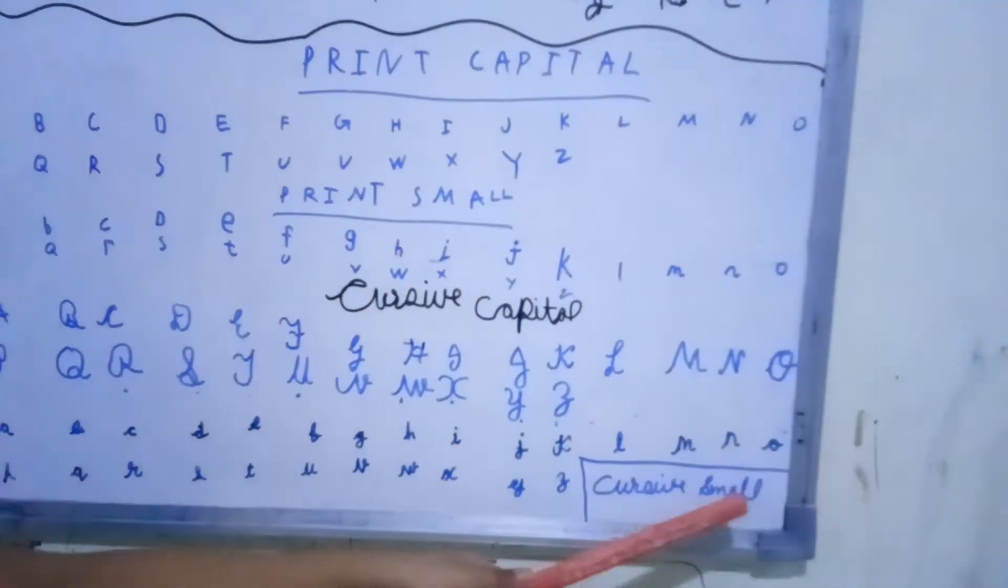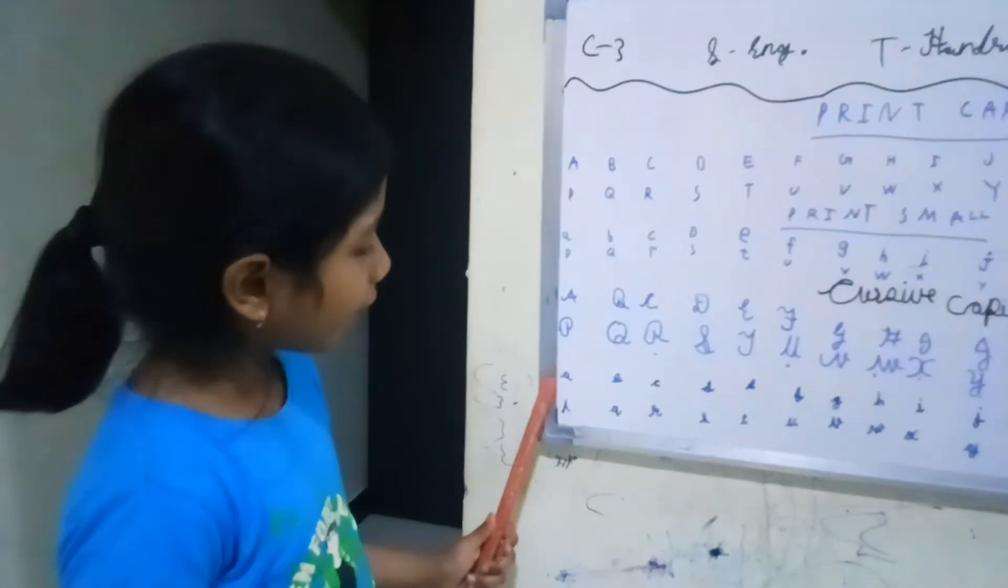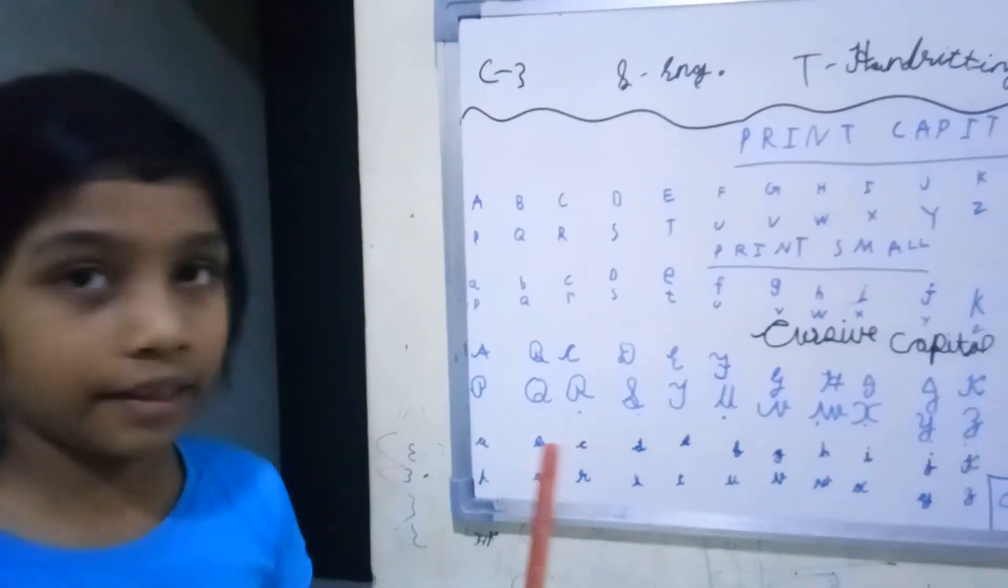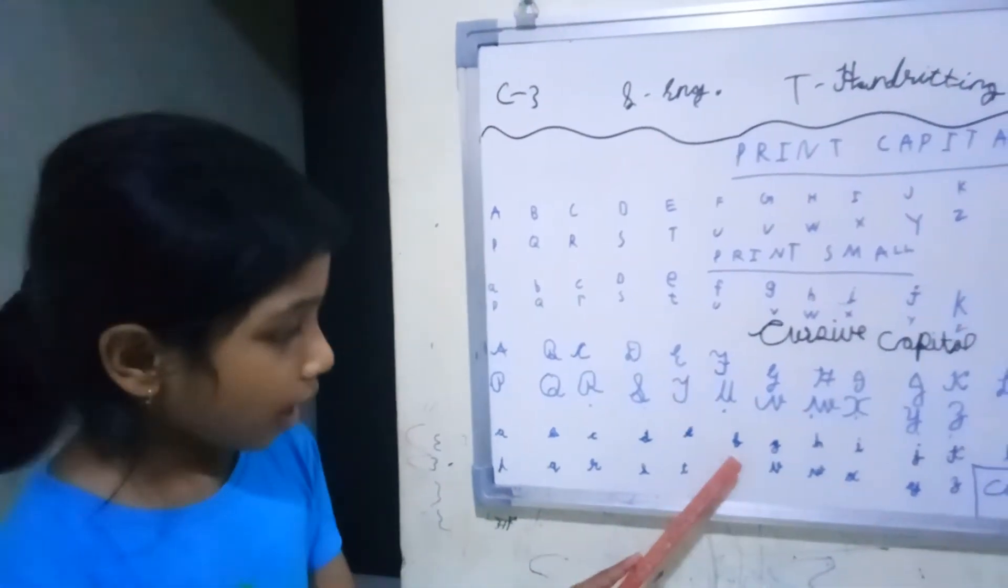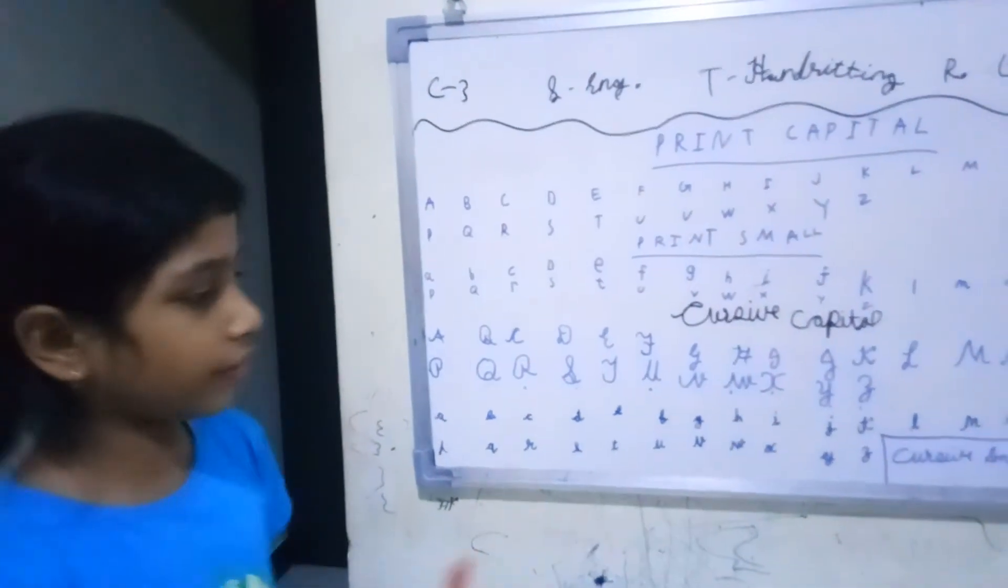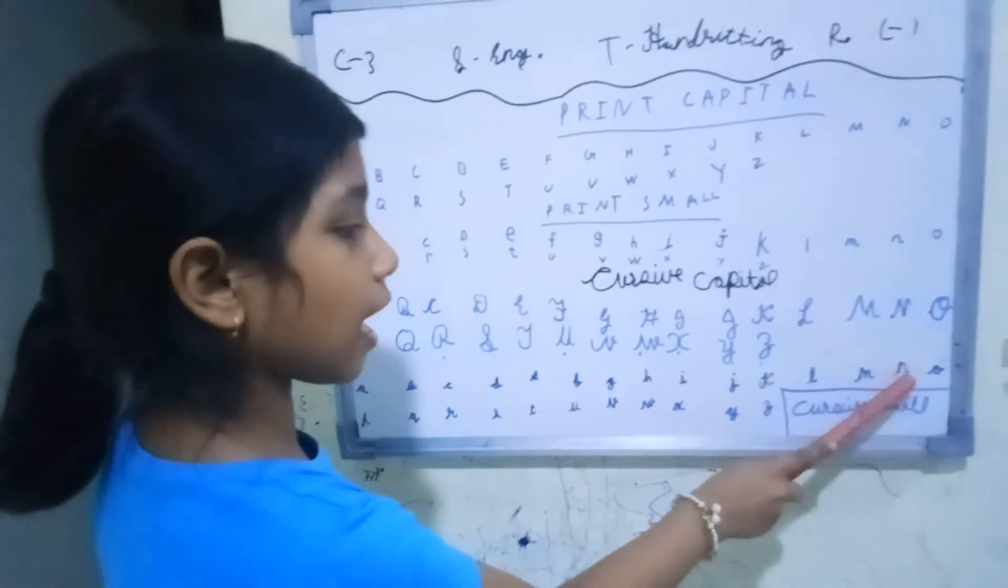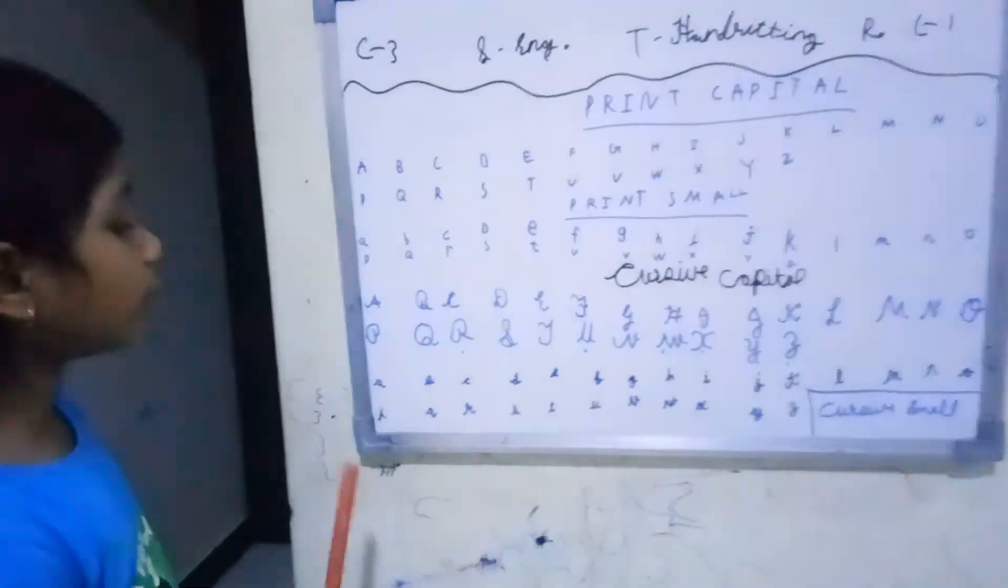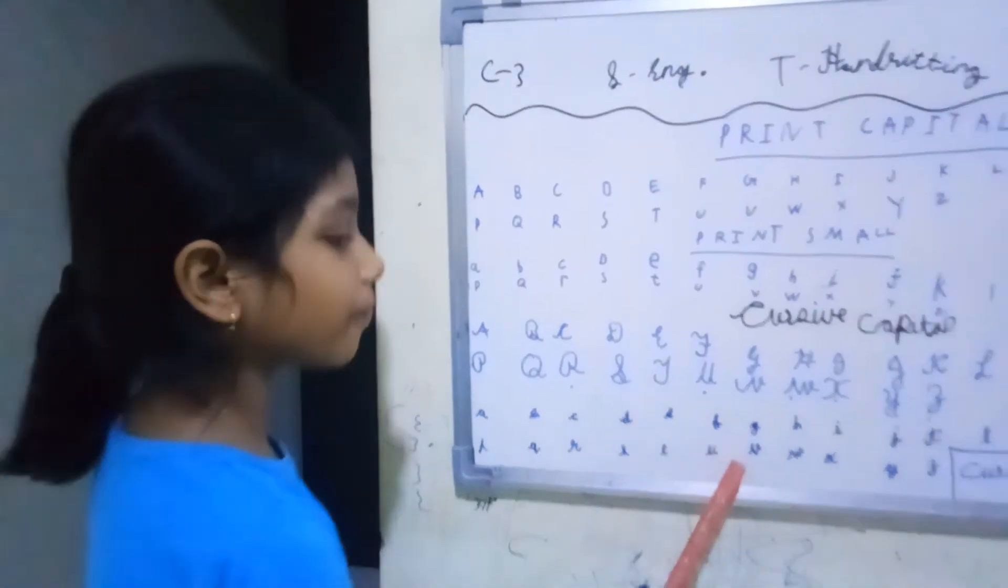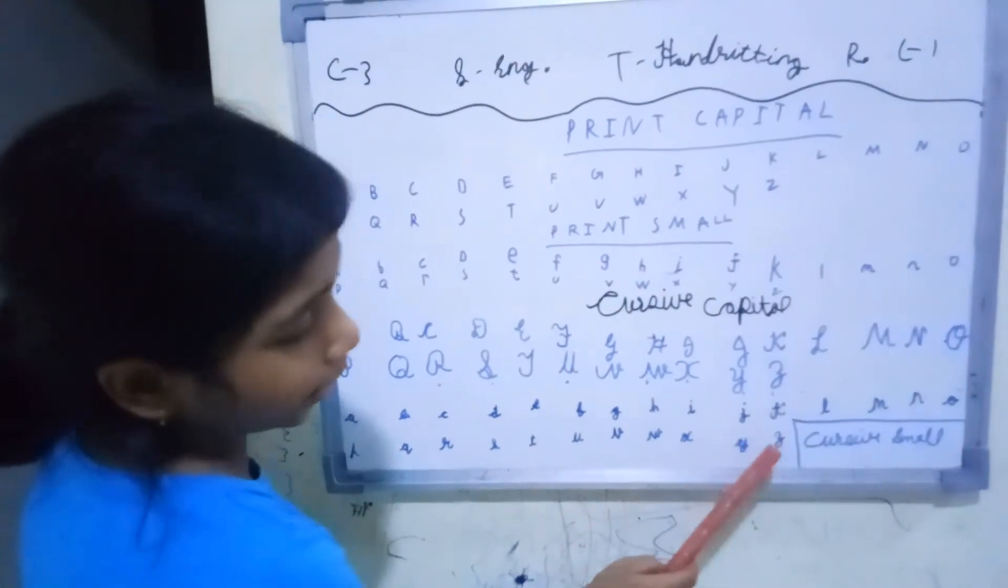This is cursive small. So now repeat with me: A, B, C, D, E, F, G, H, I, J, K, L, M, N, O, P, Q, R, S, T, U, V, W, X, Y, and Z.